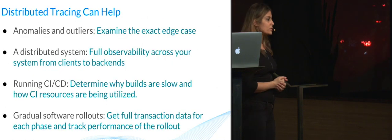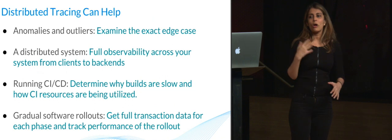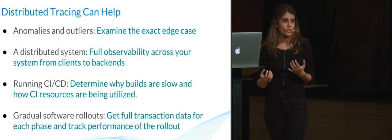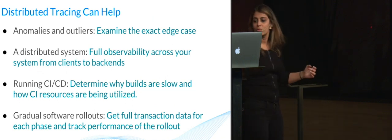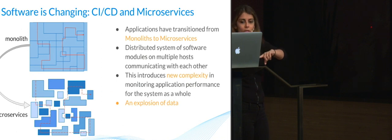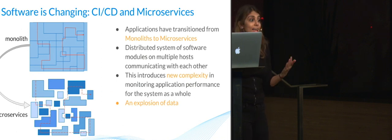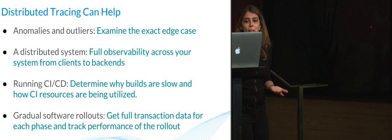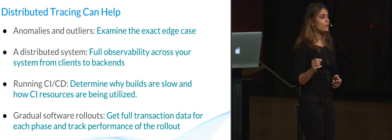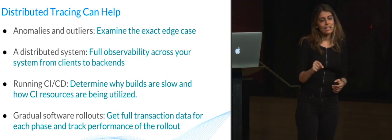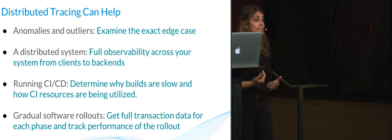This is where distributed tracing can help. If you have anomalies or outliers that you want to detect, it gets very challenging in that very fragmented system because — is it in that corner, on this corner here, where is the actual problem? With distributed tracing, you can examine the exact edge case and see what happened end-to-end in that request's lifecycle.